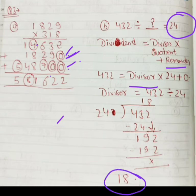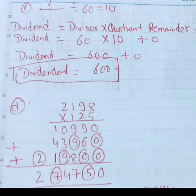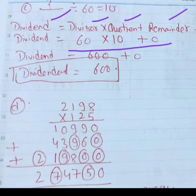Now next, dash divided by 60 equal to 10. We have to find dividend. Dividend is equal to divisor multiply quotient plus remainder. Dividend is equal to divisor 60, quotient 10, and remainder 0. So dividend is equal to 60 multiply 10, 600 plus 0, so answer aagaya 600.